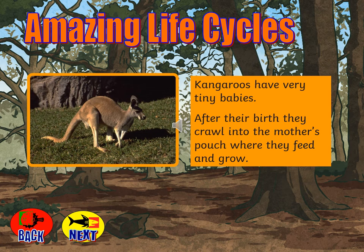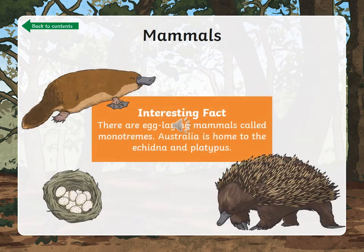Kangaroos are a special type of mammal called a marsupial, and they have very tiny babies who crawl into a pouch where they feed and grow after their birth. Another interesting fact is that there are some mammals that lay eggs, and they are called monotremes. I wonder if you could research any information about these animals.